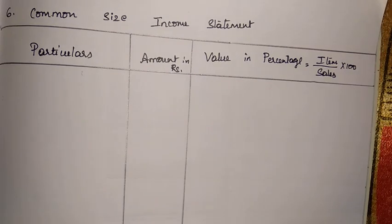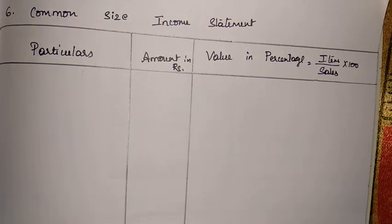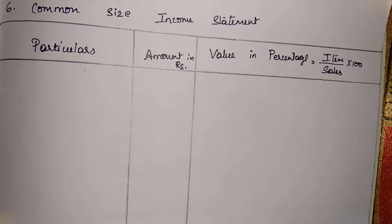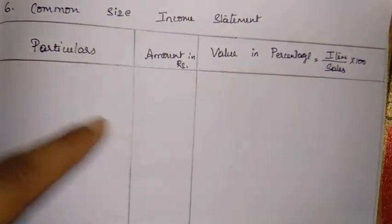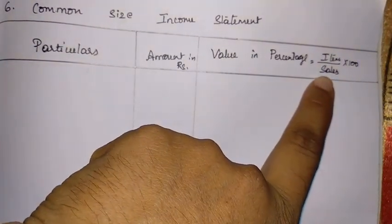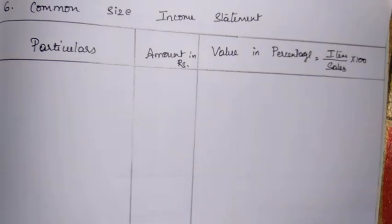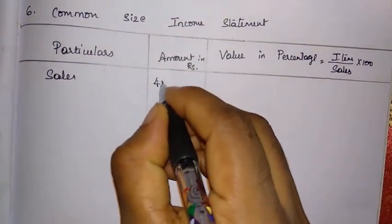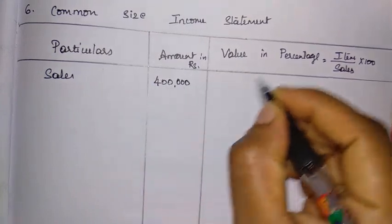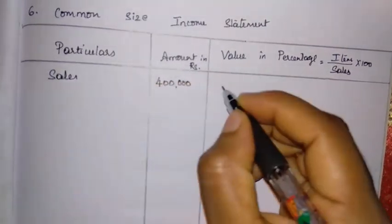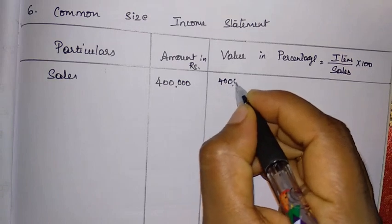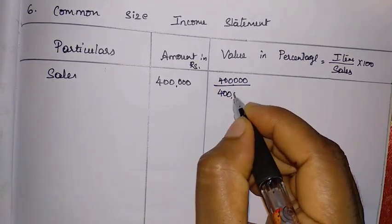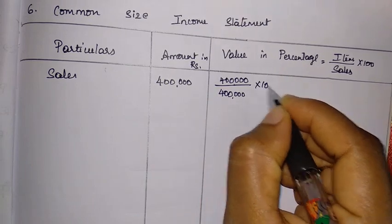Here is the common size income statement. Particulars, amount in rupees, and value in percentage — that is, item of income statement divided by the biggest amount (sales) into 100. First, let us take sales. The sale amount is 4 lakh. The value in percentage: the item is sales itself, value is 4 lakh, and the biggest amount is also sales into 100.